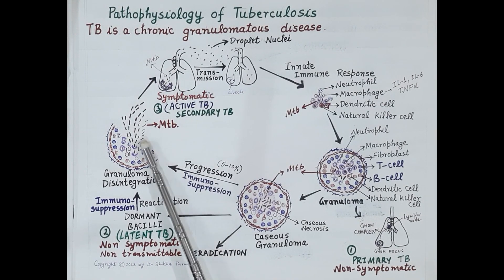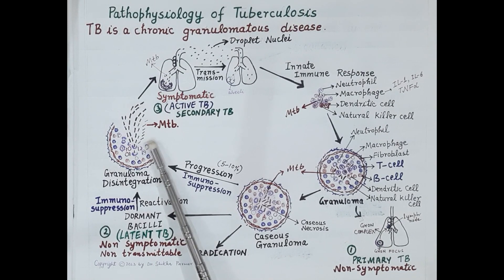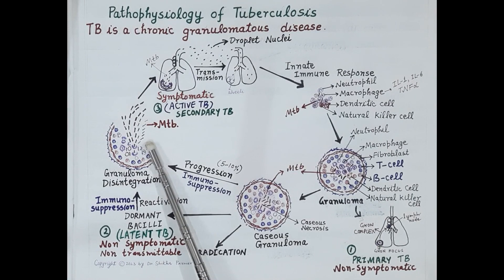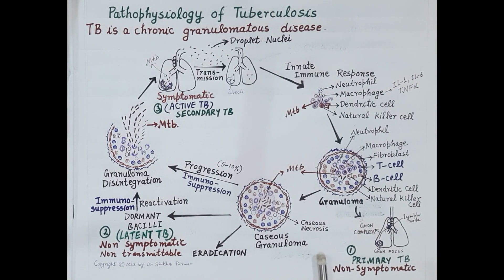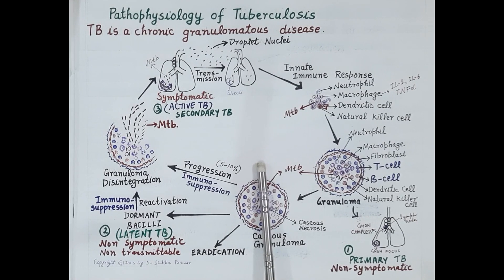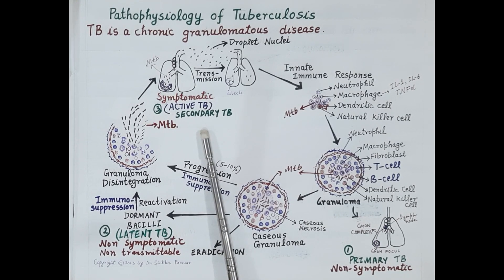During active TB, the patient is symptomatic and can also transmit the disease. If the bacilli migrate to other organs outside the lungs, this causes extra-pulmonary TB, and if mycobacteria enter the blood they can cause miliary TB. These are the three stages of pulmonary TB: primary TB, latent or dormant TB, and active or secondary TB.